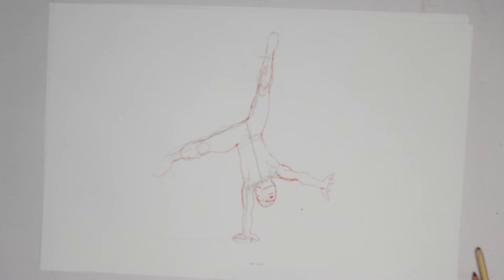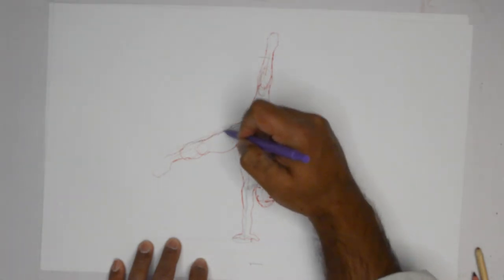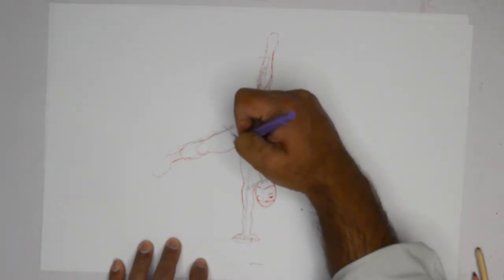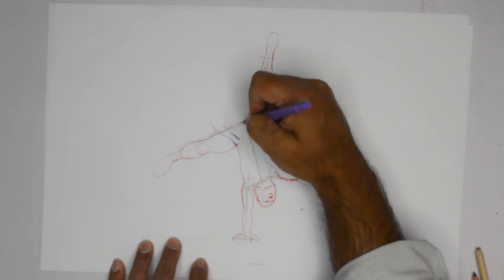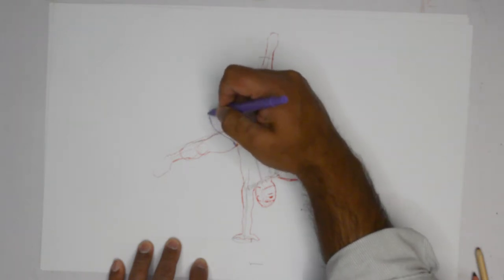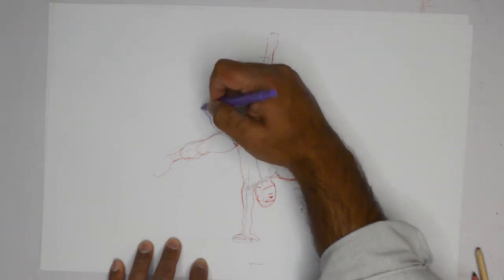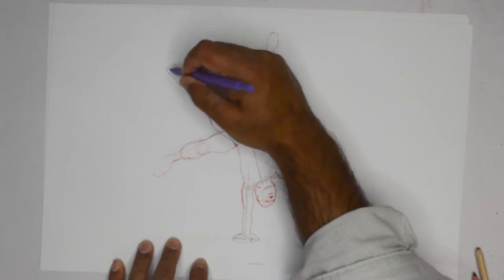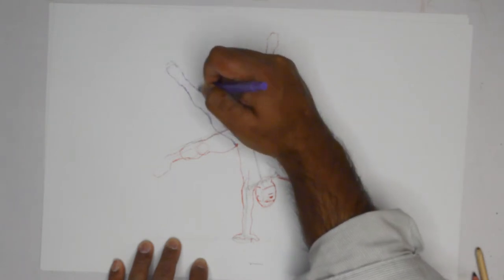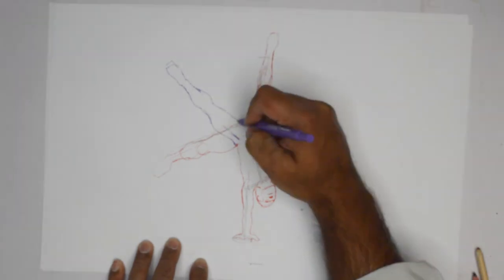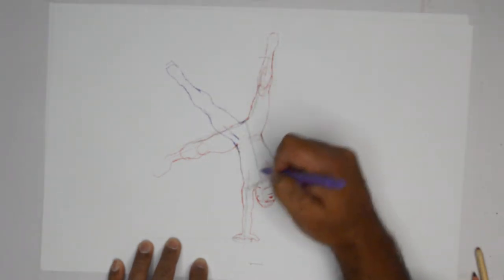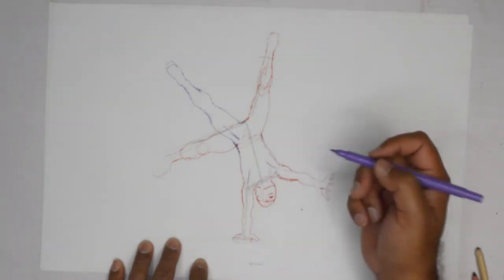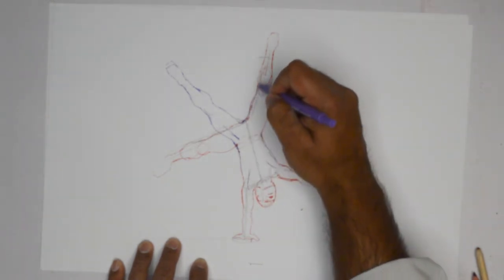But we can do some different things with this as well. So for instance, we could bring the legs closer. And all that takes is just a little change in the placement of the structure, the keyframe. So all we have to do is that. And we have also pretty much a realistic cartwheel.